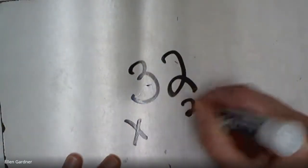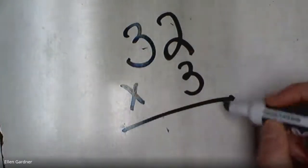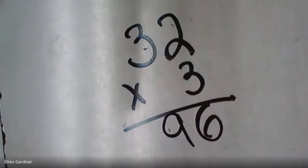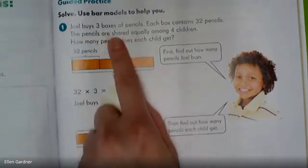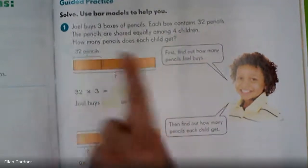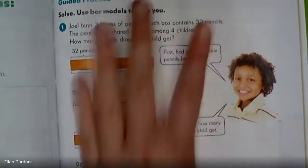I'm going to do 32 times 3 on the whiteboard. This is not one we have memorized. Two times 3 is 6, three times 3 is 9 — so 96 tells us the number of pencils altogether. 96 would be the answer. Three boxes of 32 pencils is 96 altogether. How many does each child get if they're divided among four children? We just multiplied and now we're going to divide. In this case, we multiply for the first step and then divide among four children.